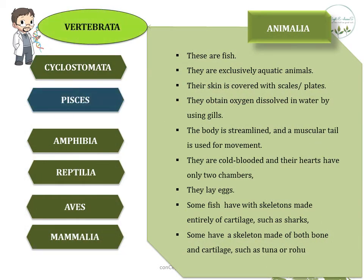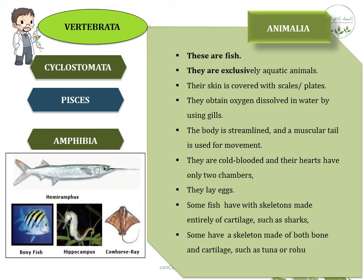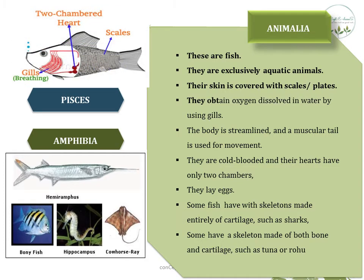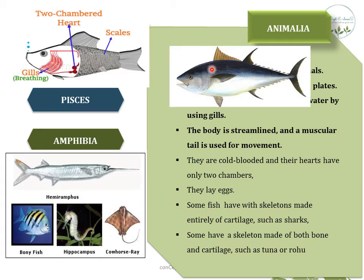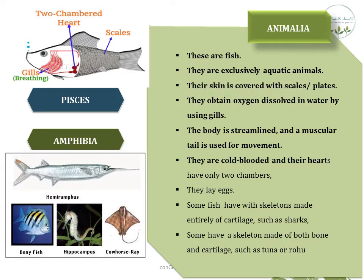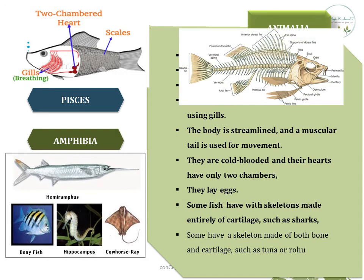The next class is Pisces, which includes all fishes. They are exclusively aquatic animals. Their skin is covered with scales or plates. They obtain oxygen dissolved in water using gills. Their body is streamlined, and they have a muscular tail used for movement. They are cold-blooded animals and their hearts have only two chambers. They lay eggs. Some fish have skeletons entirely made of cartilage, such as sharks, while others like tuna and rohu have skeletons made of both bone and cartilage.